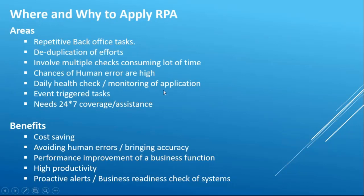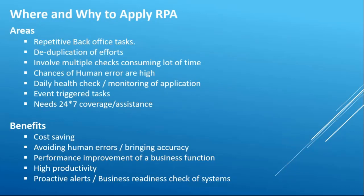RPA is also suitable where the chance of errors is high. You can use it to monitor application health — for example, checking every morning whether all applications are working and sending a report. Event-triggered tasks fall under assisted automation. Processes needing 24/7 coverage are ideal, since a human cannot work 24/7 but a robot can.